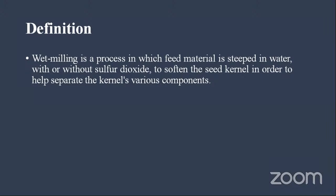The aim of wet milling is to divide the corn grain into different constituents and use each fraction separately — fibers will be separated, starch will be separated, protein will be separated, and the steeping water will also be utilized rather than discarded. In wet milling, each and every portion of the grain is utilized, as well as the steeping water.